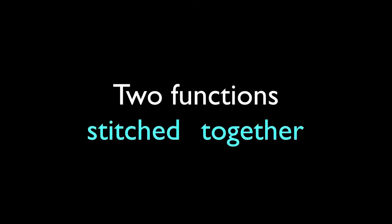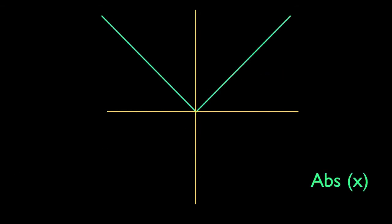Think of a piecewise function as two or more functions stitched together across a domain. In this example, we're going to use the cube root and absolute value functions. For simplicity, we'll divide the domain into left and right halves at the origin.